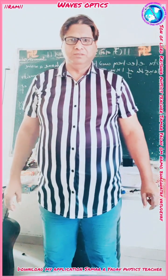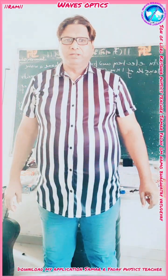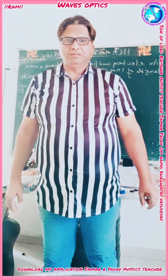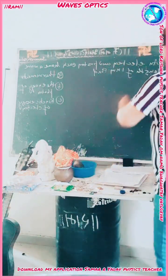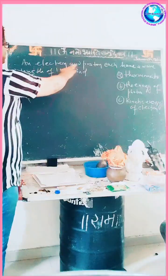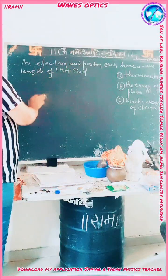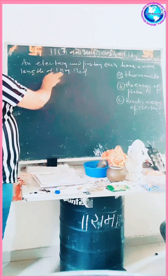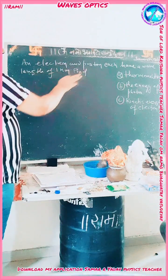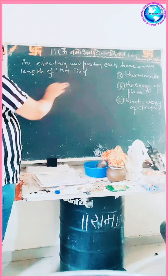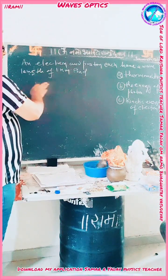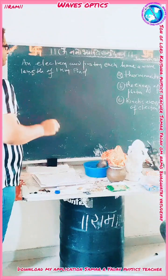In a wave-optics problem, an electron and a photon each have a wavelength of one nanometer. Find their momenta, the energy of the photon, and the kinetic energy of the electron.